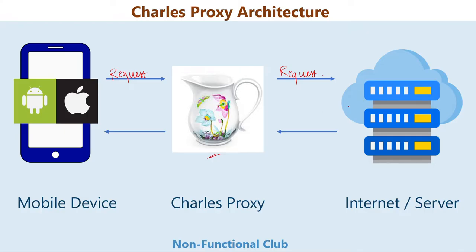Once the request goes to the server and is processed, the response also comes back through Charles Proxy, which then sends it to your client device. In Charles Proxy we have various functionalities: you can throttle the request, modify the request and send it, or slow down the network to see the request-response cycle. This is the basic architecture of how Charles Proxy works.